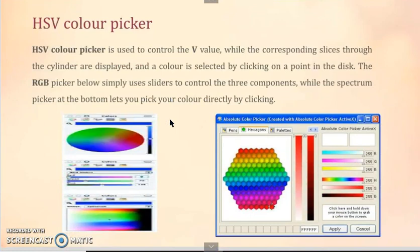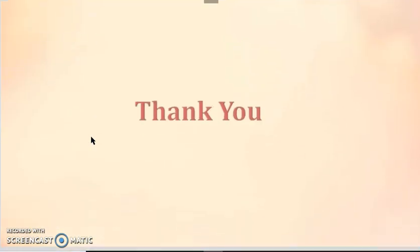HSV color picker is used to control the value while corresponding slices through the cylinder are displayed. The color is selected by clicking on a point in the disk. We click on the disk and the color is picked automatically.